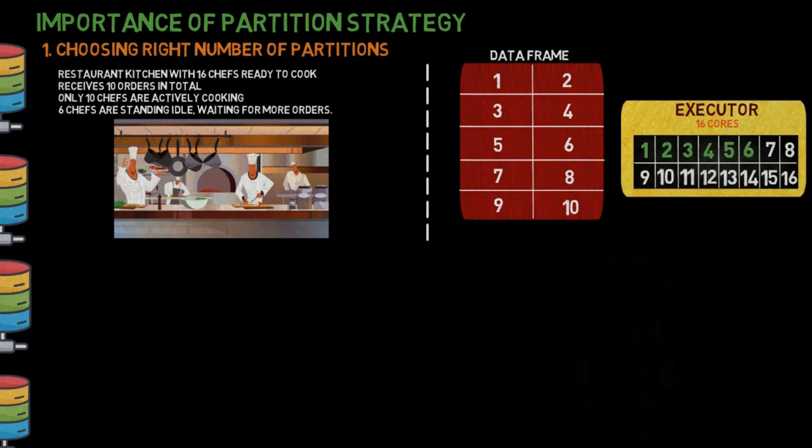Since partitions cannot be divided among cores, out of the 16 cores available, only 10 will be actively processing one partition each, leaving the remaining six cores idle.